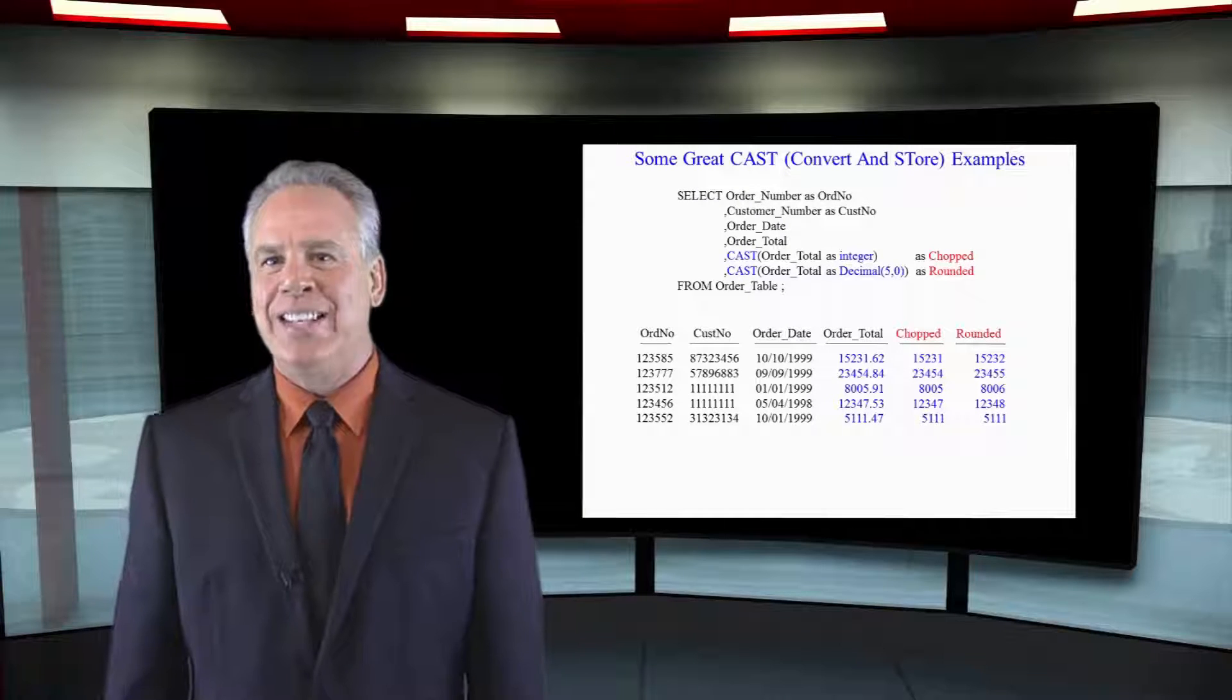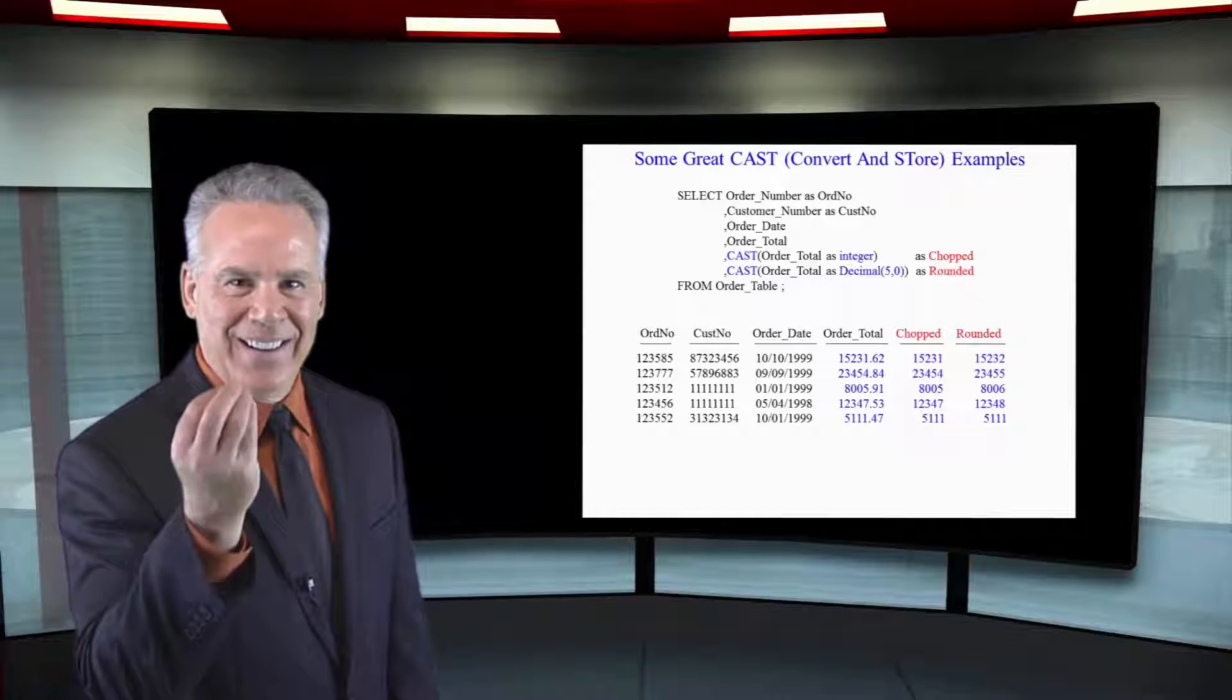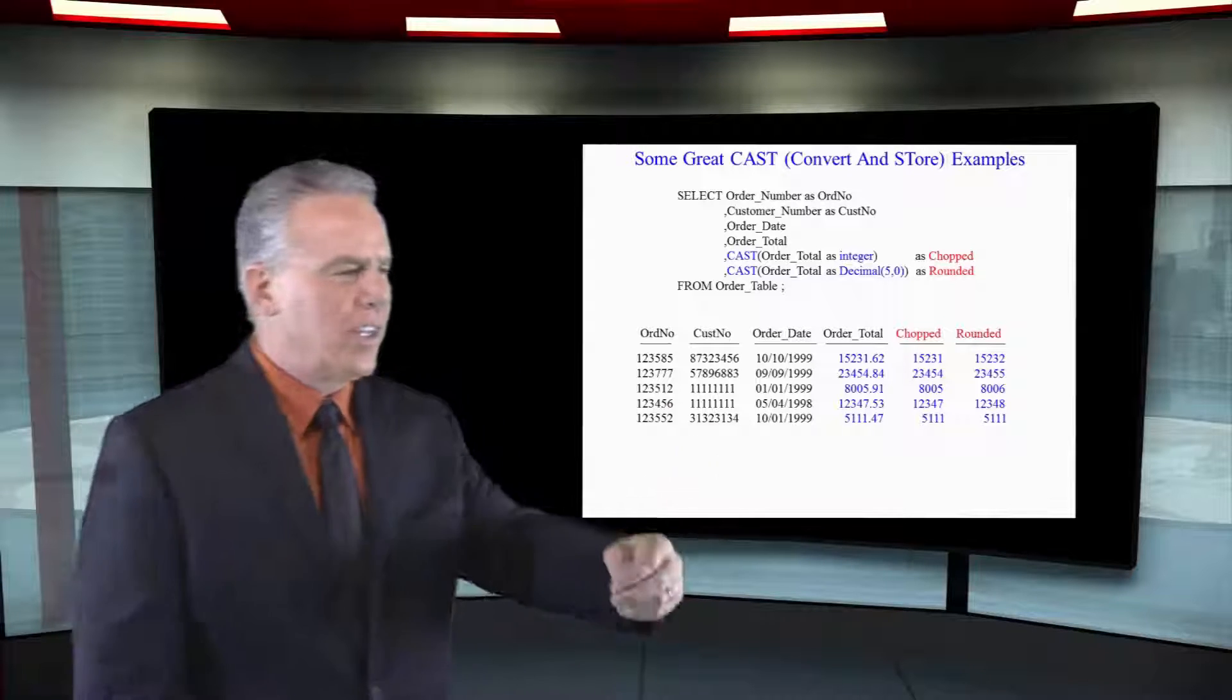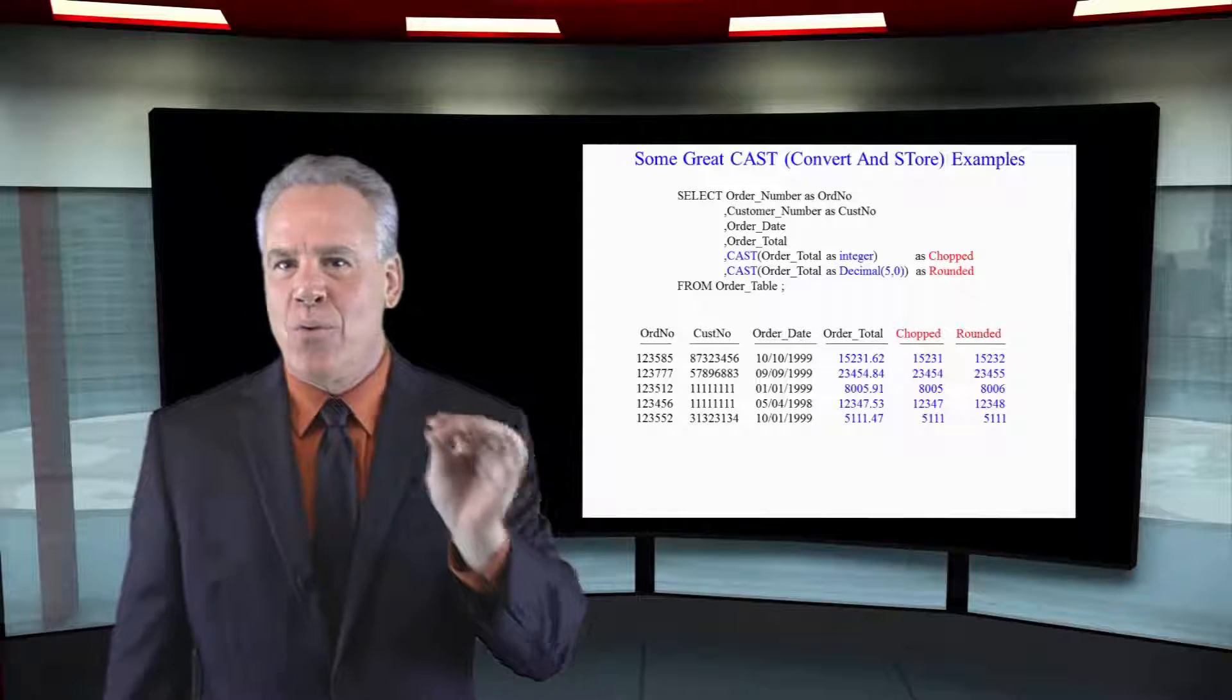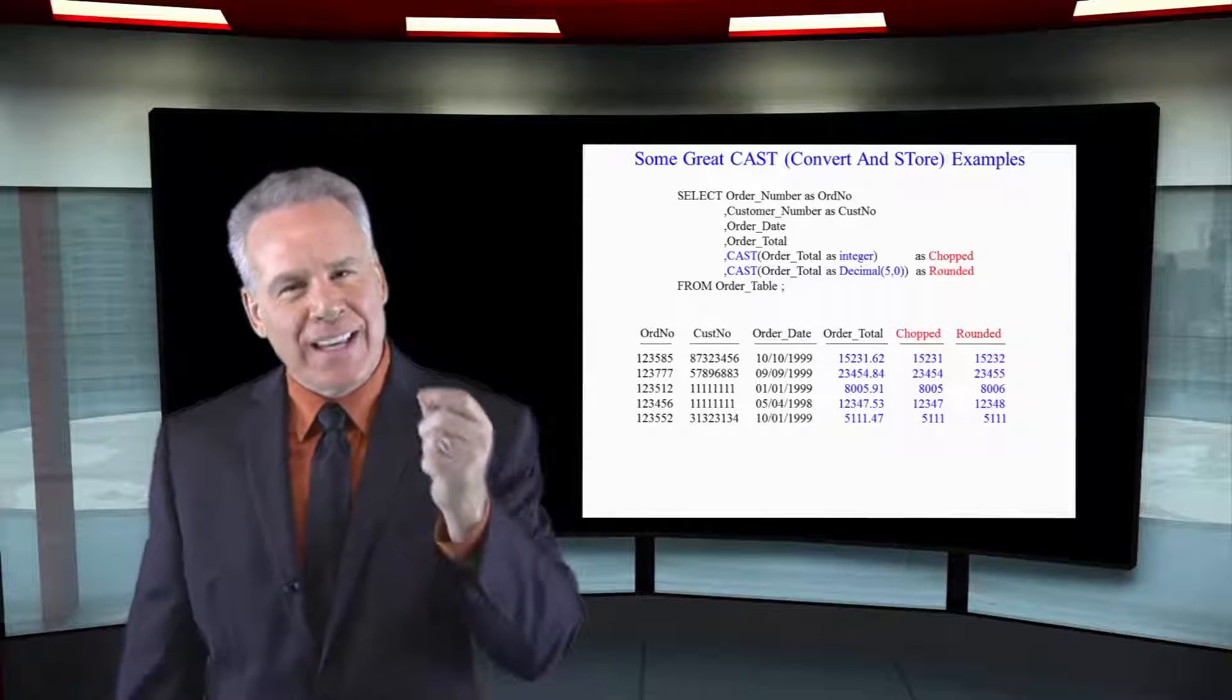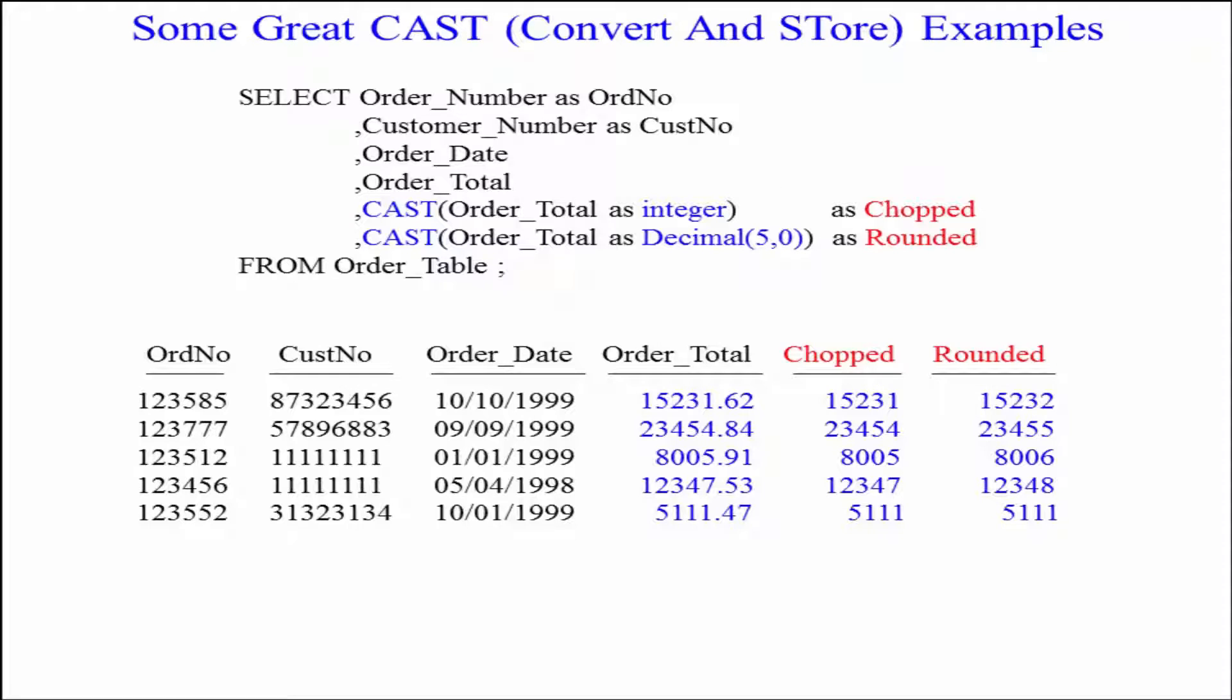Now we're going to see the CAST command in action, like you might in a real SQL statement. We're going to select the order number, the customer number, we're going to select the order date and the order total. Then we're going to cast that order total as an integer first, and then we'll cast it as a decimal five comma zero secondly. Now take a look at the results here.